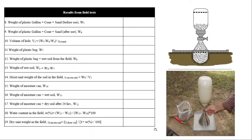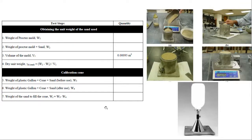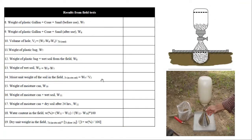Sample data will be uploaded on Canvas. You need to work on that data to determine the dry unit weight in the field and the relative compaction. The lab report format is the same as previous ones — work on the data and submit the report. That's it for today; thank you, see you next week.